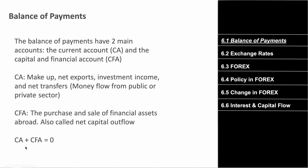The capital and financial account covers the purchase and sale of financial assets abroad — things like stocks, bonds, and derivatives. You also need to know this formula: current account plus capital and financial account equals zero. So if the current account is positive $100 billion, the capital and financial account is negative $100 billion — one will always be positive and one negative.